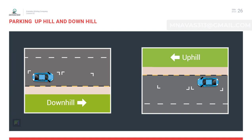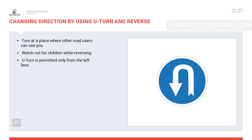Parking uphill and downhill: when parking uphill, the wheels should be turned towards the road to prevent the vehicle from rolling down. When parked downhill, the wheels should be steered towards the curbstone for the same purpose.